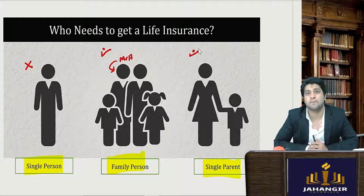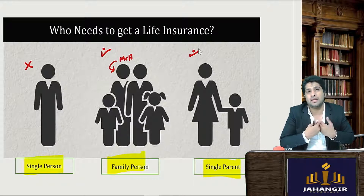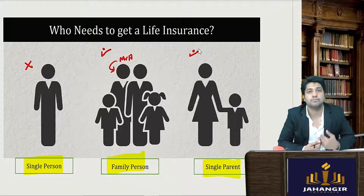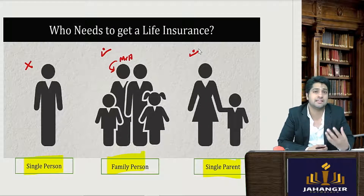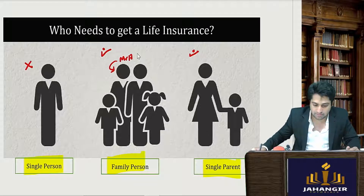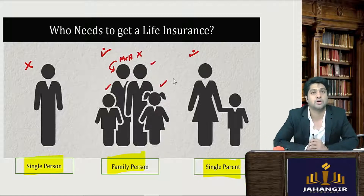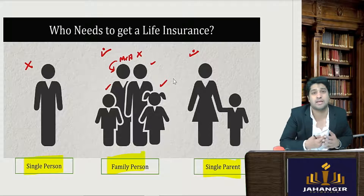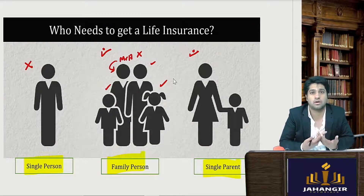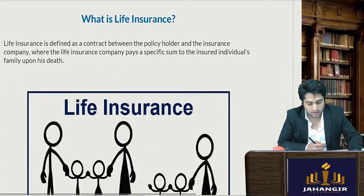Life insurance protects your beneficiaries after you are gone. The life of a certain person is insured for a certain sum, so that in case the person dies, a certain amount is given to the beneficiaries. People who have dependents should definitely get their life insured so that in case of any unforeseen or untimely death, the family is not hit economically.